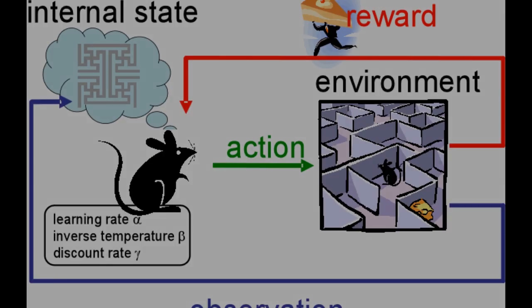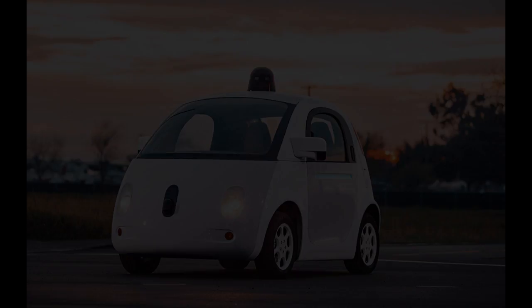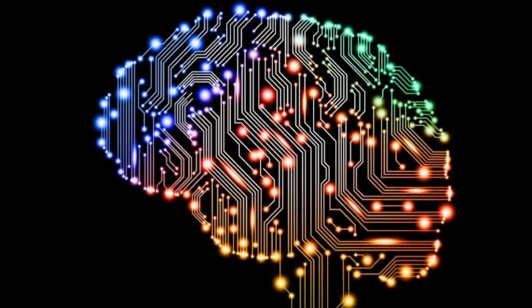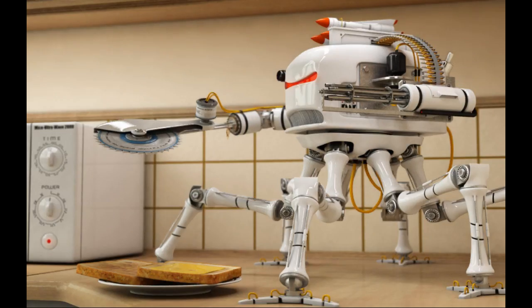Machine learning is even being used to program self-driving cars, which is going to change the automotive industry forever — imagine a world with drastically reduced car accidents simply by removing the element of human error. Google famously announced that they are now machine learning first, and many other companies like NVIDIA are following suit. This is what's going to drive innovation in the coming years, with machine learning embedded into all sorts of different products.